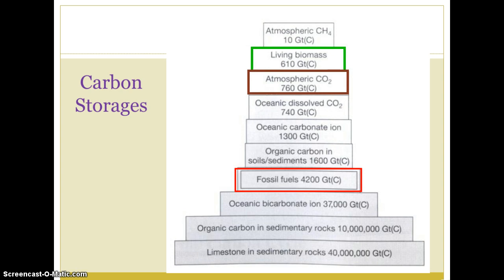Photosynthesis removes large amounts of atmospheric carbon dioxide, but an approximately equal amount of carbon dioxide is returned to the atmosphere by cellular respiration. Most photosynthesis each year leads to formation of tissue that is rapidly recycled, including tree leaves. There is seasonal variation in atmospheric CO₂ levels due to deciduous forests losing their leaves and winter senescence, and global spatial variations as the northern hemisphere has a greater land mass. The burning of fossil fuels adds a large amount of carbon dioxide to the atmosphere.